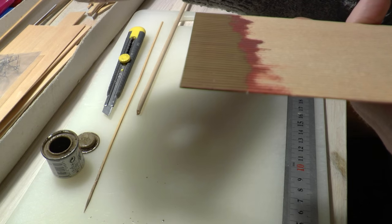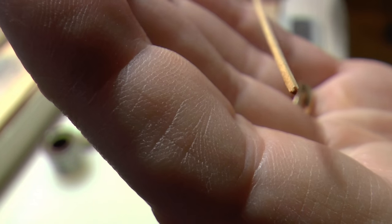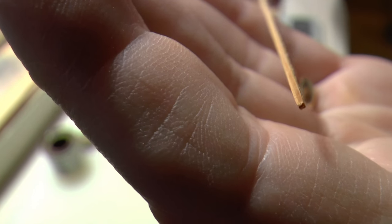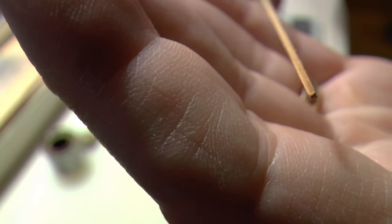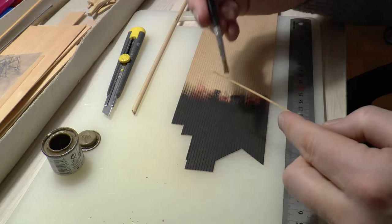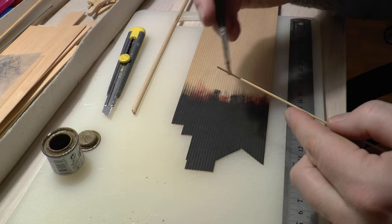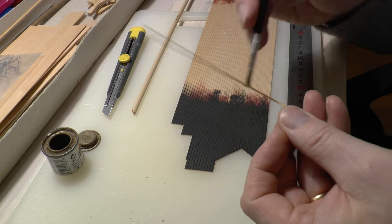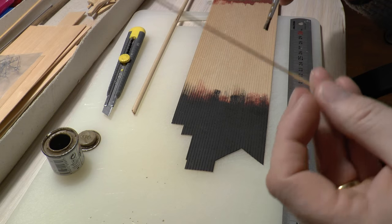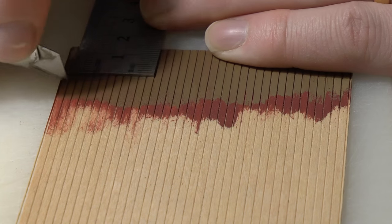Once you're happy with the planking, it's time for the support beams which would sit underneath the bridge. This is a 1.5 millimeter square spruce, and I paint that in the same natural wood color.